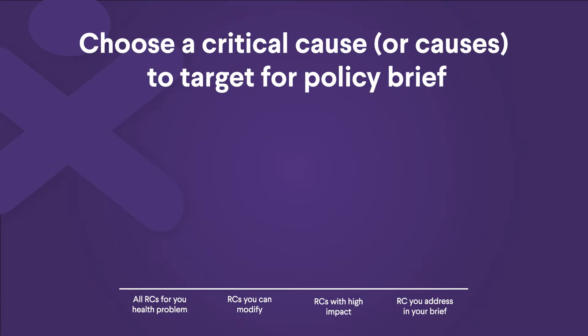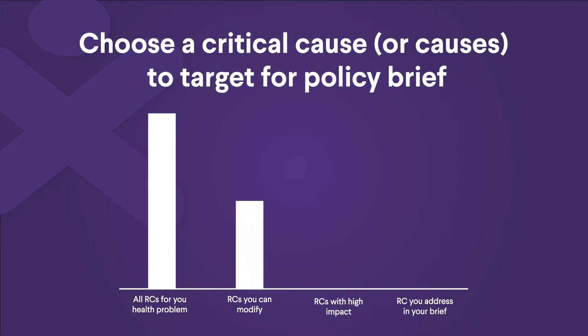As you go through this process, you start with all potential root causes before you narrow these down to the ones that you can modify. Next, you limit your options to those with the highest expected impact before finally identifying a critical cause or a small number of critical causes to target.